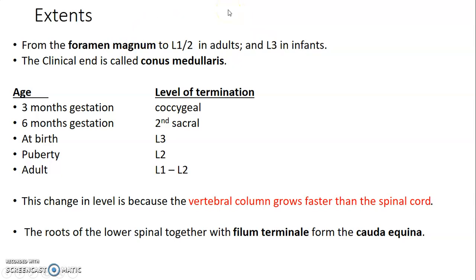The extent of the spinal cord: it extends from the foramen magnum to the L1-L2 junction in adults, and in infants the spinal cord goes to the L3 level. The caudal end of the spinal cord is at the conus medullaris. At three months gestation it's at the coccygeal region; at six months gestation it reaches the second sacral bone; at birth it goes to L3; at puberty to L4; and in adults it ends at the L1-L2 junction. This change occurs because the vertebral column grows faster than the spinal cord.